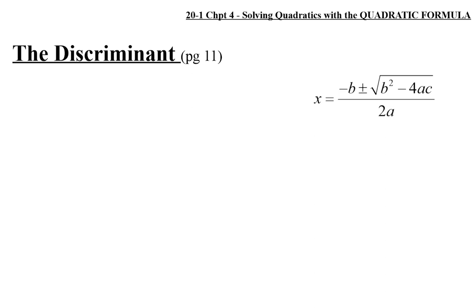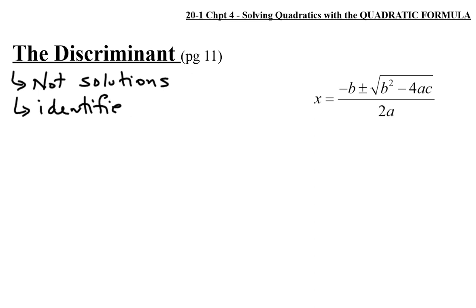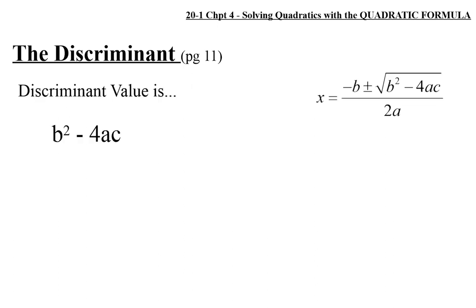From there, on page 11, there are discussions of the discriminant. What's important is to understand that the discriminant does not solve — it does not give solutions. What it is is a value that identifies the number of solutions that an equation will have. The discriminant is just about how many solutions are possible from a particular equation. The discriminant value D equals b squared minus 4ac — that value under the root sign tells us how many solutions there are.